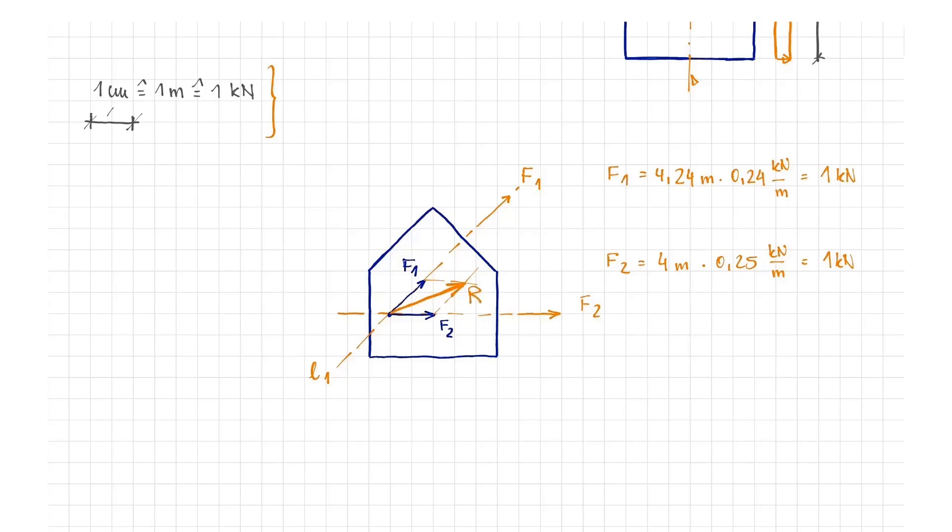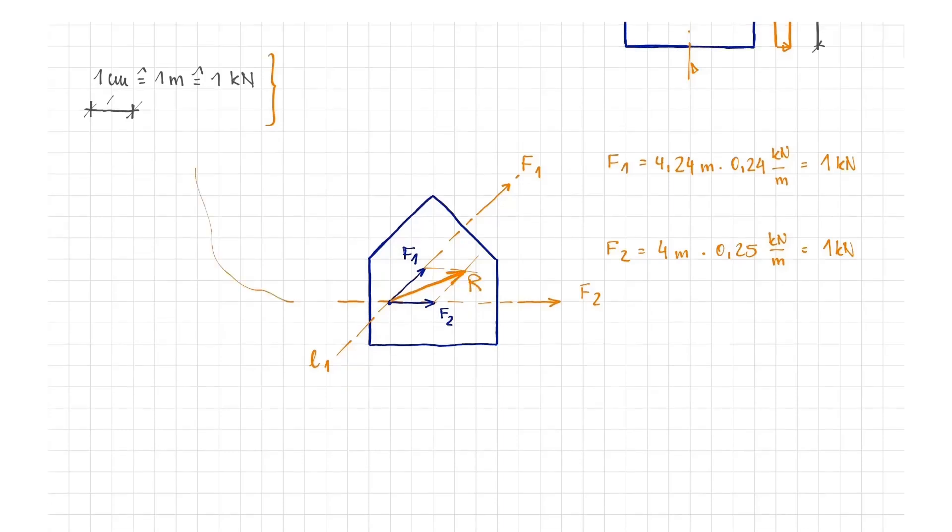The units are defined on top. 1 cm drawn here corresponds to an actual length of 1 m as well as 1 kN. Our forces are drawn to scale. Here you can see that F1 and F2 each have a length of 1 cm.